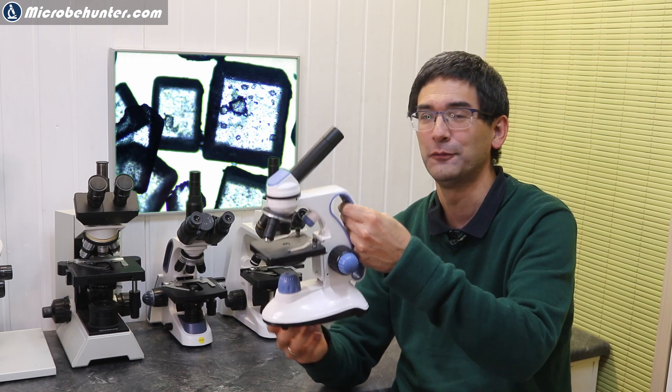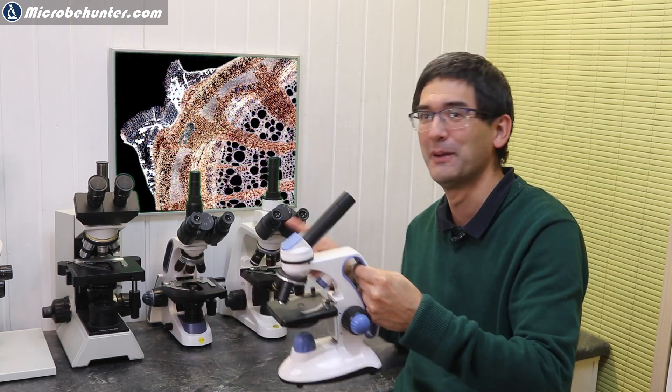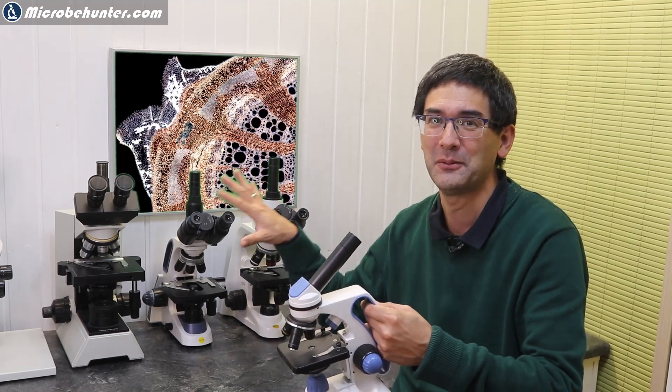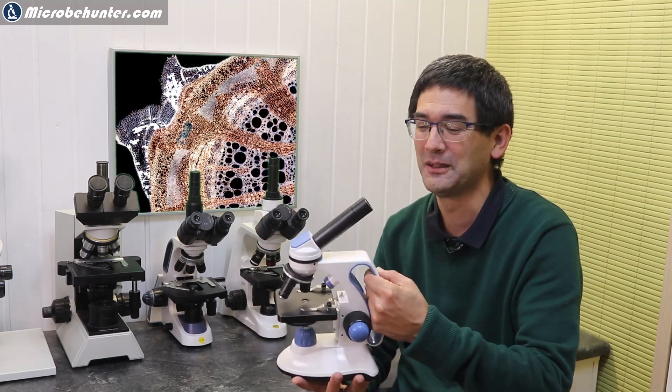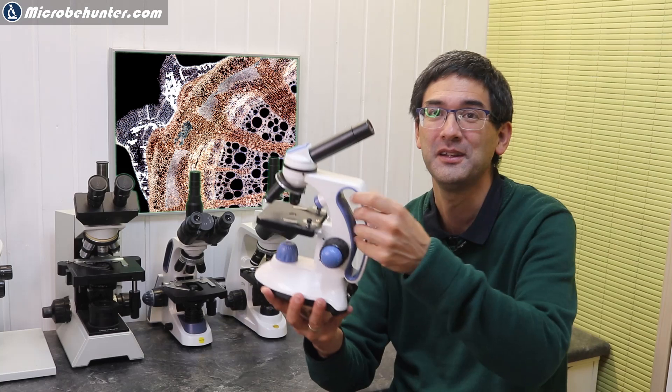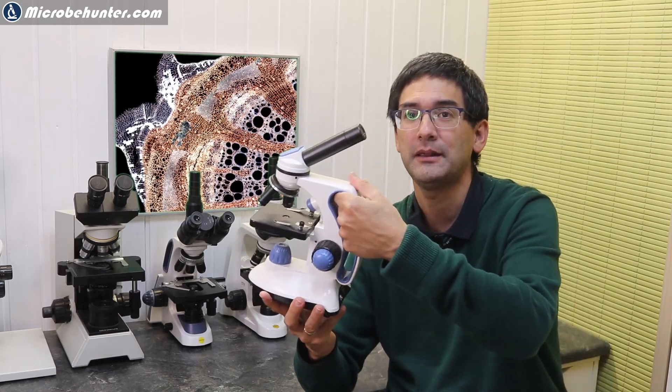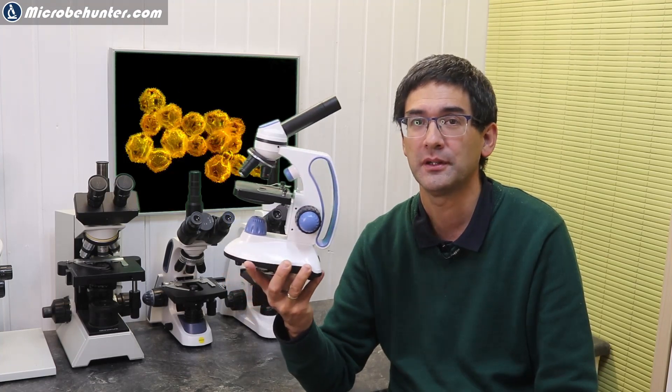Just look at the size difference, nice and portable. Look at those microscopes that I have here. They have to stay on the table, otherwise it's going to be too dangerous to carry them around. But this one can be easily carried around, has a nice grip here. Especially for schools and educational use, and especially if portability is needed, then those small microscopes are quite useful.